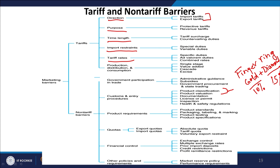Quotas are another type of non-tariff barrier. There can be export quotas — how much can be exported — and import quotas — how much can be imported. There are also financial controls and other policies and requirements. These are the tariff and non-tariff barriers available to the government in order to increase, decrease, or change the direction of trade in the country.